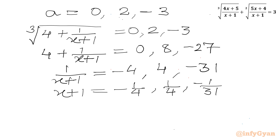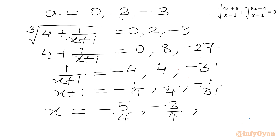Subtracting 1 from both sides gives our three solutions: x = -1/4 - 1 = -5/4; x = 1/4 - 1 = -3/4; and x = -1/31 - 1 = -32/31.